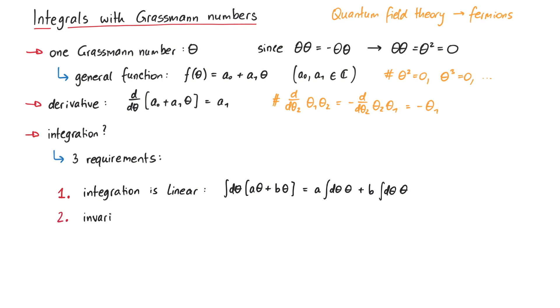Second, we want that integration over Grassmann numbers is invariant under translations. This is because we want to use them in quantum field theory, where such a behavior is very convenient.